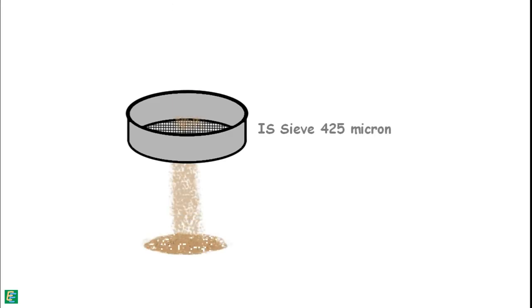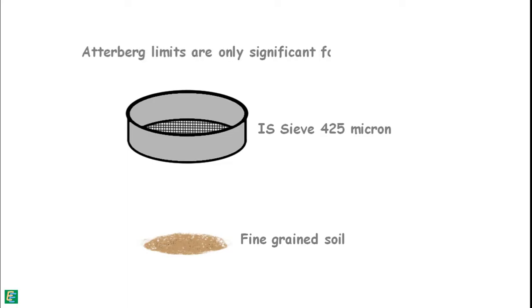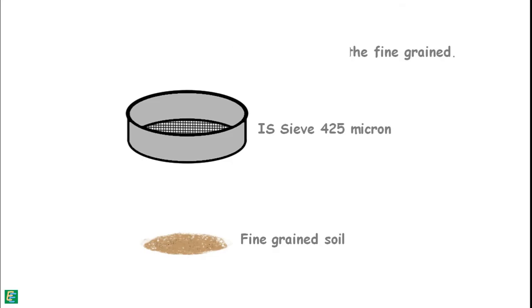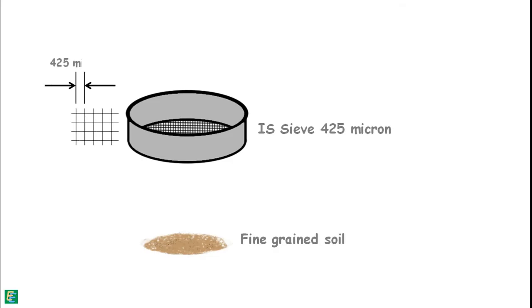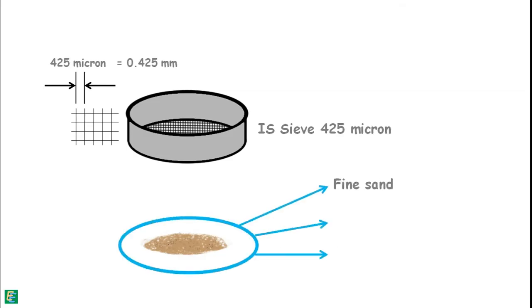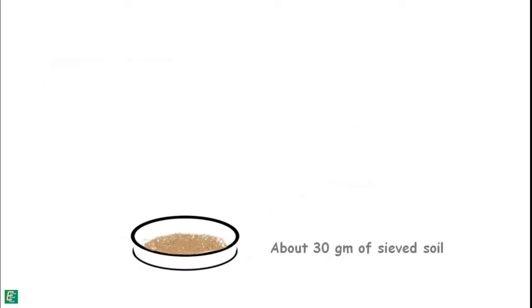For the determination of shrinkage limit, the soil is air-dried and sieved through a 425 micron IS sieve to get fine-grained soils only, because Atterberg limits are only significant for fine-grained soils. The 425 micron IS sieve has mesh openings of 425 microns or 0.425 mm. The particles obtained after sieving are all smaller than 425 microns and include fine sand, silts, and clays. About 30 grams of this sieved soil is taken in an evaporating dish.